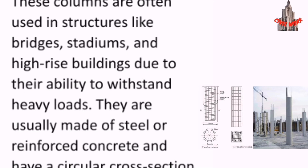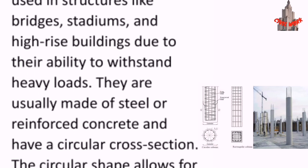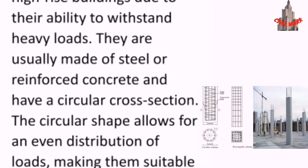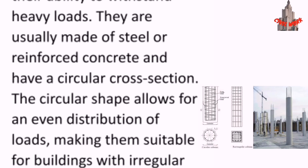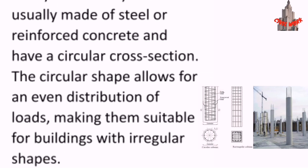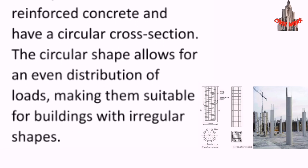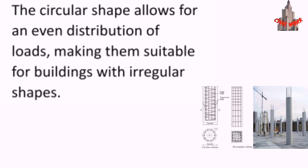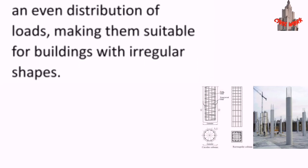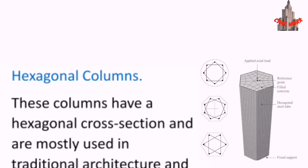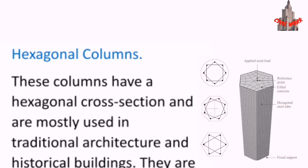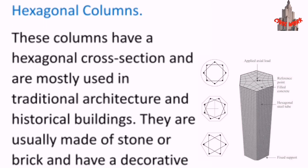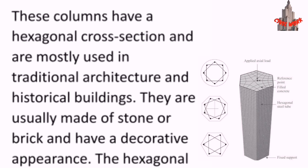Circular or round columns are often used in structures like bridges, stadiums, and high-rise buildings due to their ability to withstand heavy loads. They are usually made of steel or reinforced concrete and have a circular cross section. The circular shape allows for an even distribution of loads, making them suitable for buildings with irregular shapes.